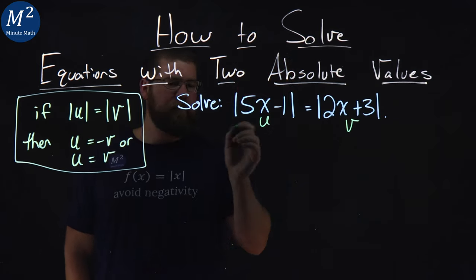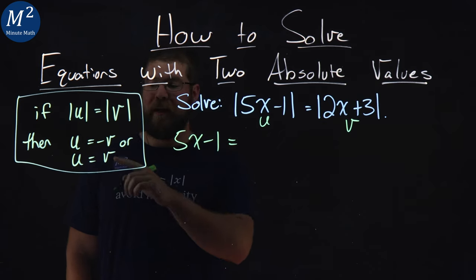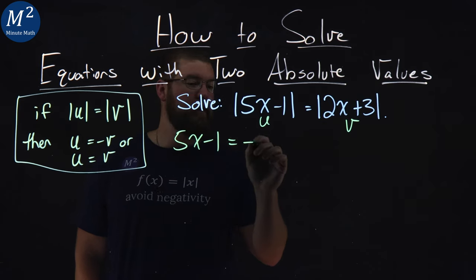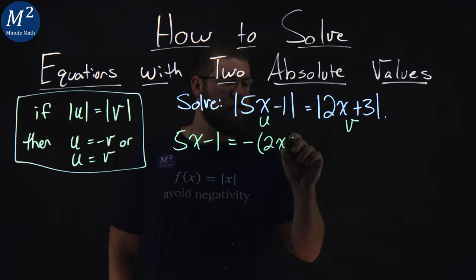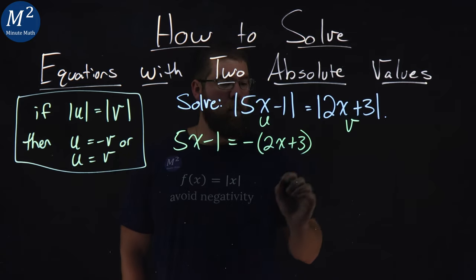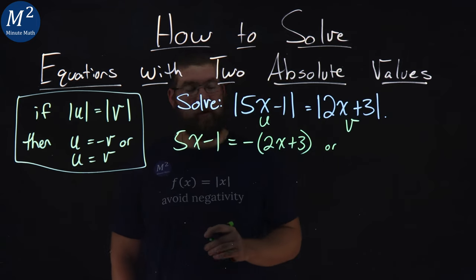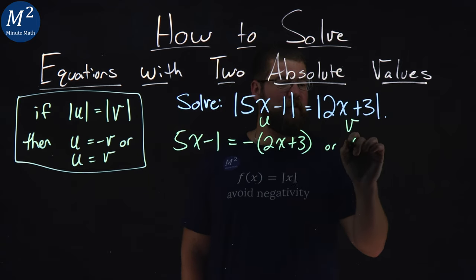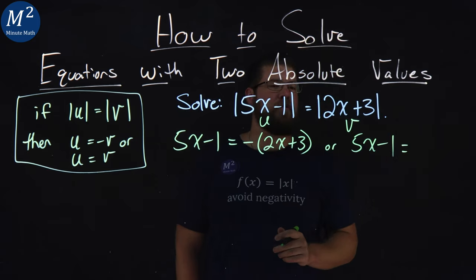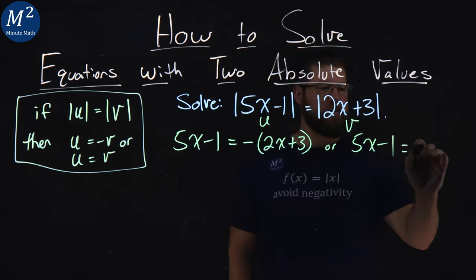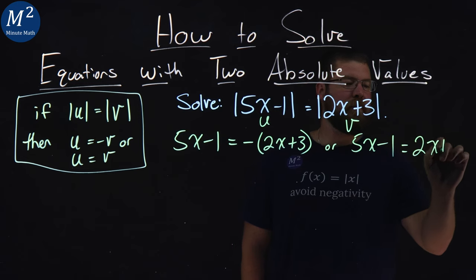From there, 5x minus 1 (our u) is equal to negative v — v being 2x plus 3 — or 5x minus 1 is equal to positive 2x plus 3.